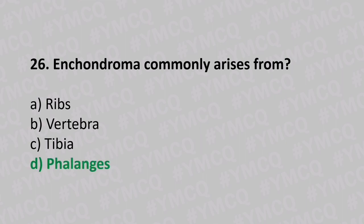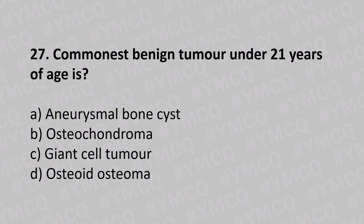Question number twenty-seven: the commonest benign tumor under 21 years of age is option A aneurysmal bone cyst, option B osteochondroma, option C giant cell tumor, option D osteoid osteoma. The answer is option B, osteochondroma.